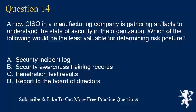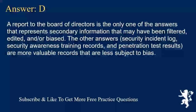Question 14. A new CISO in a manufacturing company is gathering artifacts to understand the state of security in the organization. Which of the following would be the least valuable for determining risk posture? A. Security incident log. B. Security awareness training records. C. Penetration test results. D. Report to the board of directors. Answer D. A report to the board of directors is the only one of the answers that represents secondary information that may have been filtered, edited, or biased. The other answers — security incident log, security awareness training records, and penetration test results — are more valuable records that are less subject to bias.